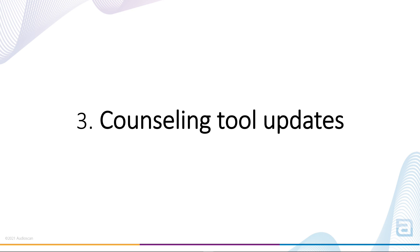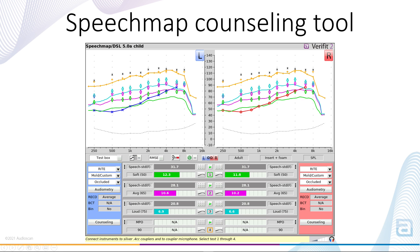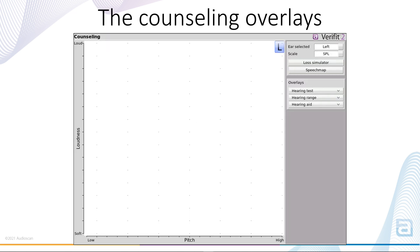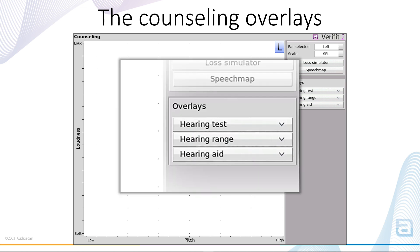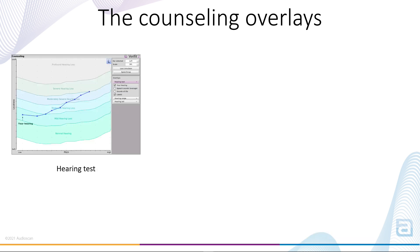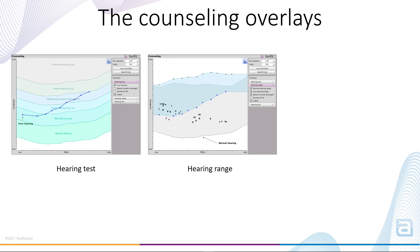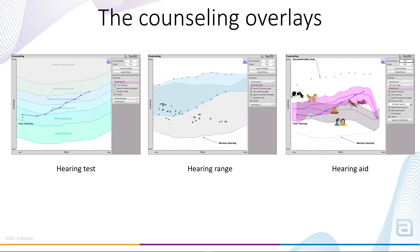Feature 3: Counseling Tool Updates. In 2020, we added a new counseling tool to the Verifit 2 SpeechMap screen. It's accessed from either of these two buttons and provides a set of simplified tools to support patient counseling in SpeechMap. In the 2021.2 software update, we've made some enhancements to this feature at the request of our users. Once launched, the counseling tool can display data pulled in from SpeechMap along with a series of overlays. These are organized into three overlay groups: Hearing Test, which deals with the severity of the hearing loss; Hearing Range, to support discussions around reduced dynamic range; and Hearing Aid, which brings the aided and unaided speech spectra into the picture.